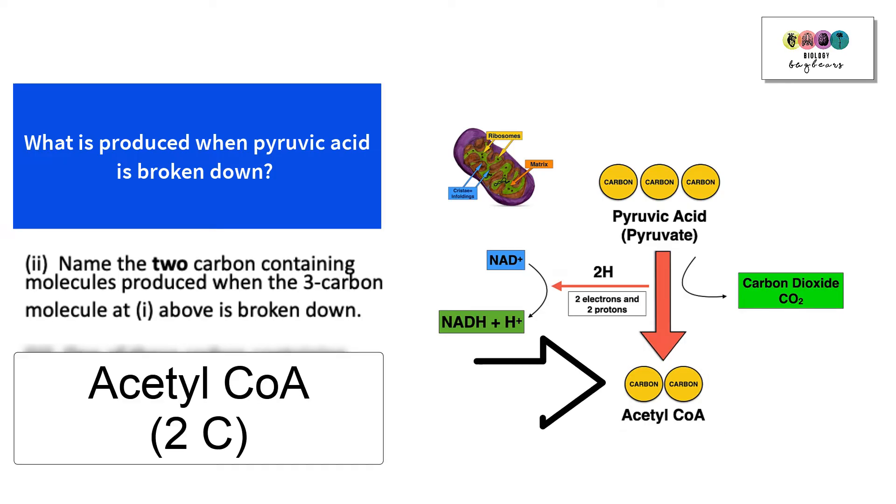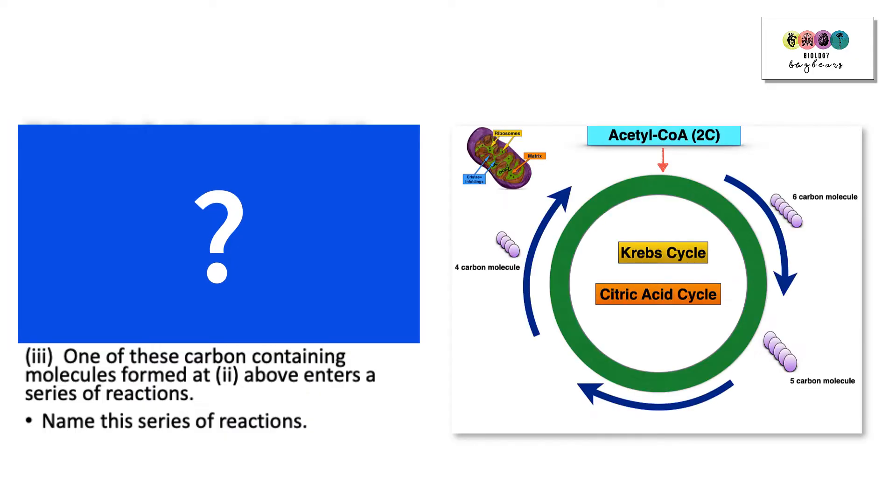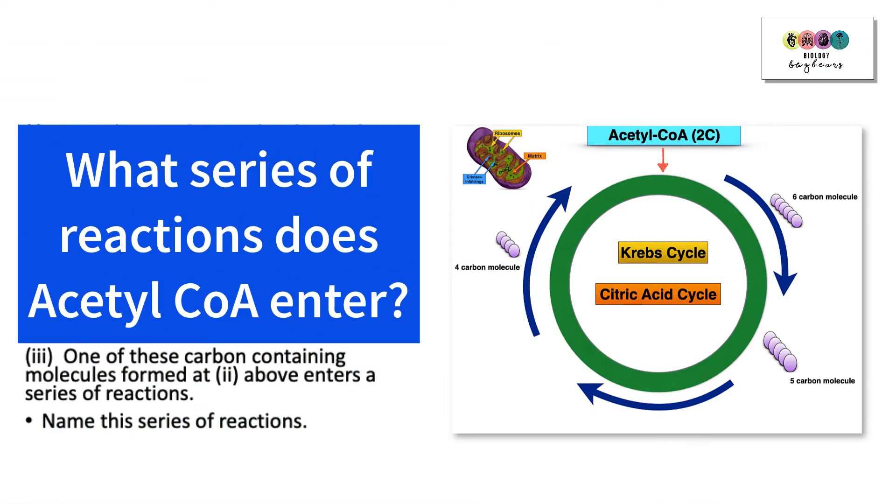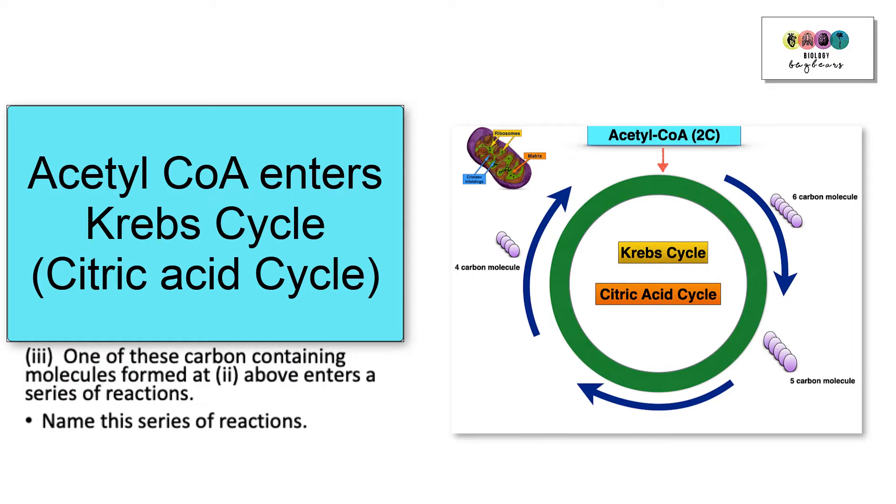Next part of the question: One of these carbon containing molecules formed at two above enters a series of reactions. We know that it's acetyl-CoA they're referring to. So they're asking what series of reactions does acetyl-CoA enter into, and acetyl-CoA enters into Krebs cycle, otherwise known as the citric acid cycle, that series of reactions.